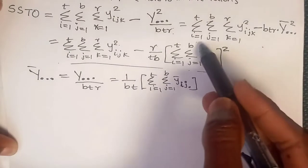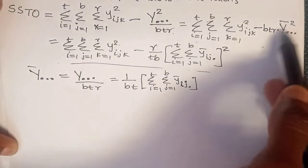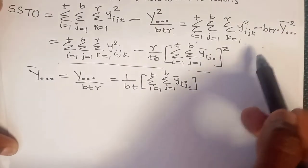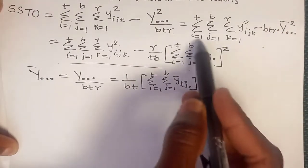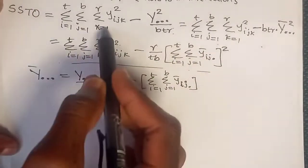You can also express this using the grand mean: the first part of the formula is the same; the only difference is that instead of dividing by btr for the grand sum, you multiply by btr for the grand mean.